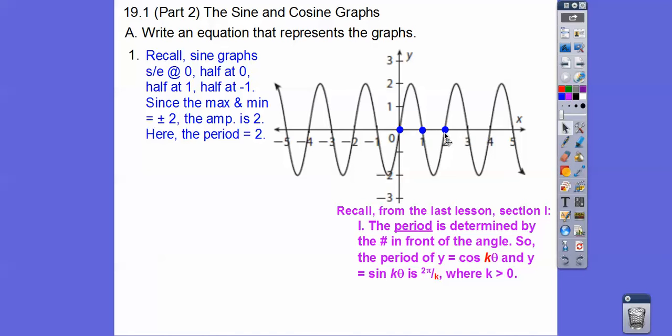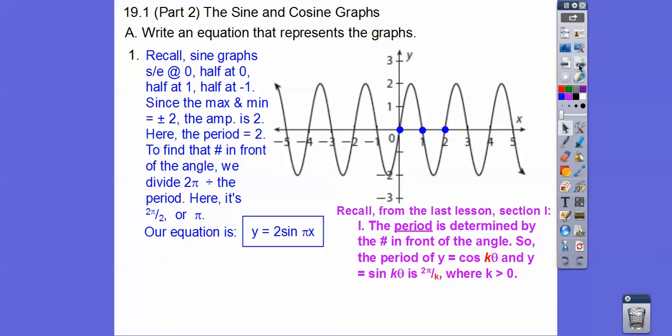One of my students asked me, Gerard asked me today, is two pi the same as two? Well, no, it's not. Two pi is two times 3.14, which is 6.28, which is not the same as two. Here, we've got to do two pi divided by two to get the period. The amplitude is two. So we divide two pi divided by the period and we get pi. There's our equation right there.